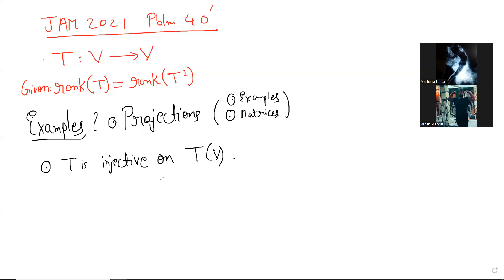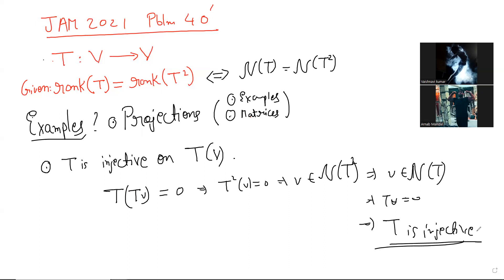This is correct, because if you take something in T(V) and apply T on it, if it equals zero, that implies T square v equals zero. That implies v is in the null space of T square, which implies v is in the null space of T, which implies T(v) is zero. Which implies T is injective on T(V), not on V necessarily, on T(V).